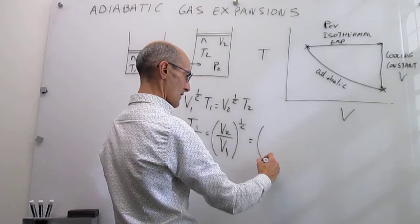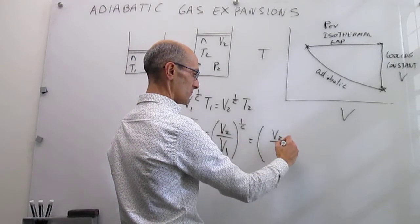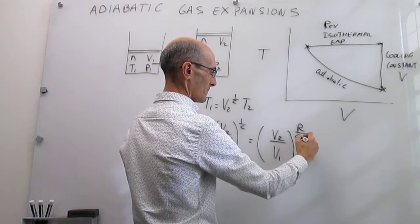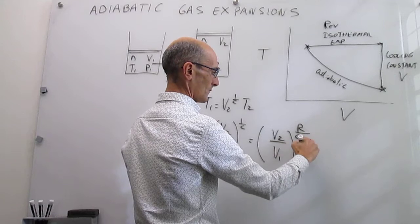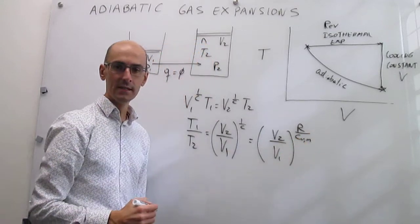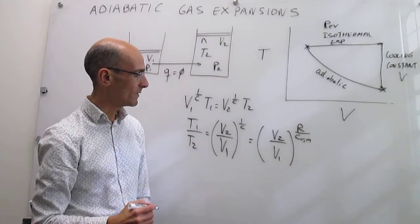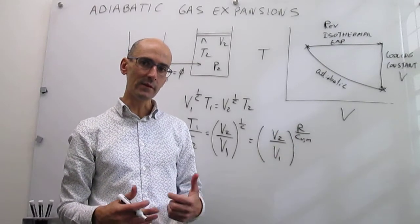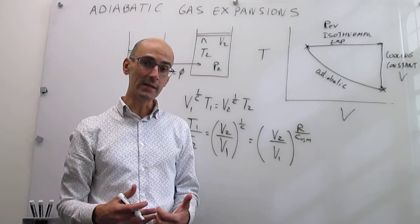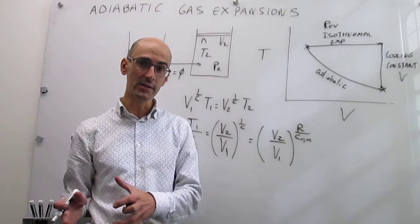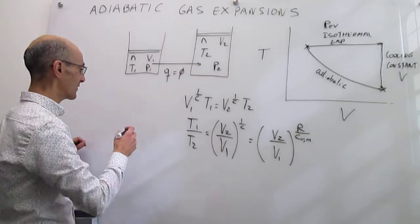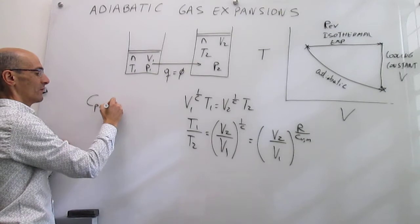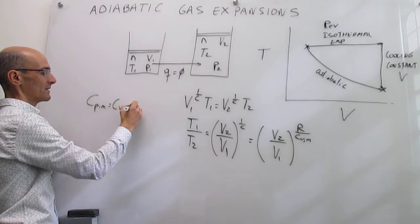Notice that that 1 over C now is going to be equal to R over C_Vm. That is the heat capacity, molar heat capacity at constant volume. It turns out that we actually know that R constant is a fundamental relationship between the heat capacities at constant pressure and constant volume of an ideal gas. In earlier work, we have seen that indeed the relationship between heat capacities of an ideal gas is this one.